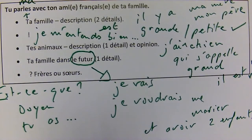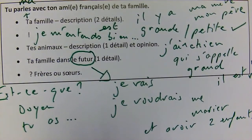'Alors maintenant parle moi du futur — comment serait ta famille dans le futur?' 'Dans le futur, je voudrais me marier et avoir deux enfants.' 'Super, pareil! Alors pose moi une question maintenant.' 'Est-ce que tu as des frères ou soeurs?' 'Oui, j'ai un frère qui s'appelle Julien, il est super sympa.' 'Ok, alors au revoir les gars, à plus tard pour le numéro 3, au revoir, salut!'